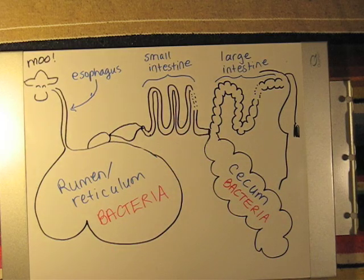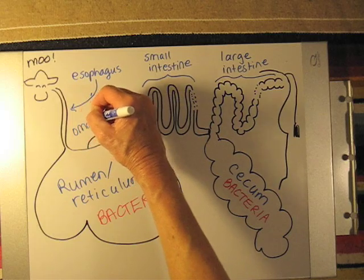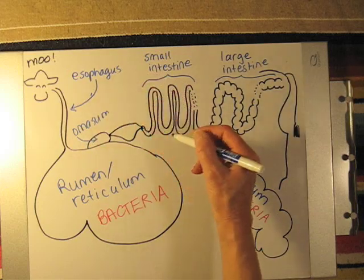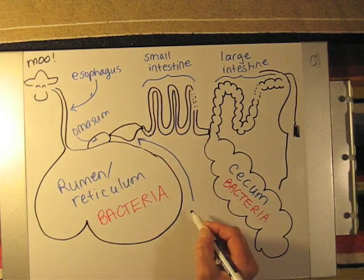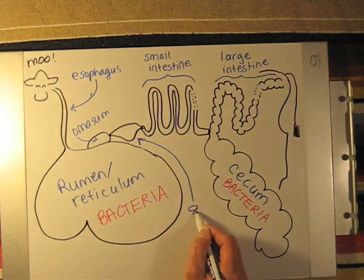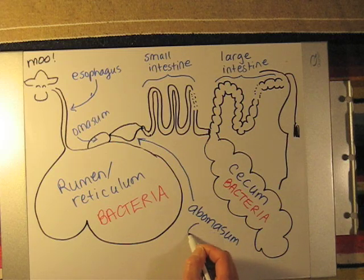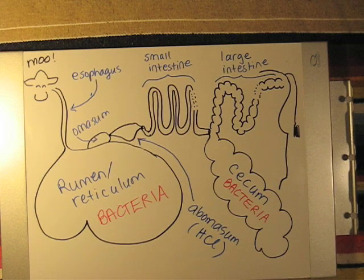The omasum functions primarily to remove water from the material. It is the abomasum, the fourth compartment of the ruminant four-compartment stomach, that is comparable to the stomach of the monogastric animal. The abomasum secretes hydrochloric acid and is very similar to the monogastric animal. That's digestive physiology in three minutes or less.